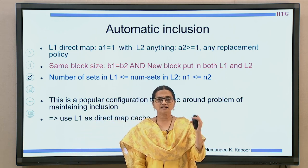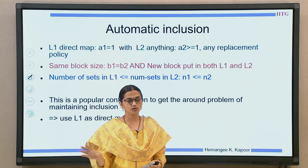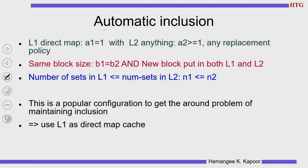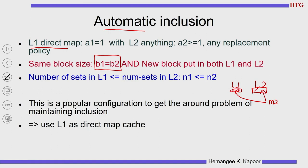The L2 is definitely much bigger — we want the back-end cache to be bigger than the first level cache. Automatic inclusion is guaranteed when L1 is a direct map cache. We can guarantee this by using the same block sizes. When you have the same block size, when you bring a block M3 in, you copy it in both caches. You have to make sure that M3 is loaded in both caches, the block sizes are the same, and the number of sets in L1 is much smaller than that in L2. If you guarantee these three points, then inclusion will be automatically maintained.